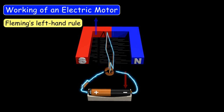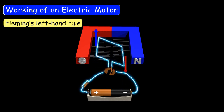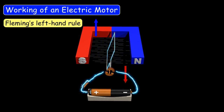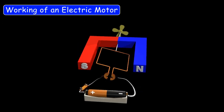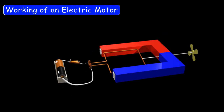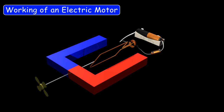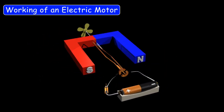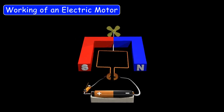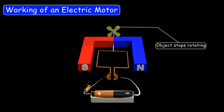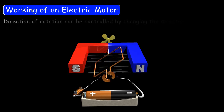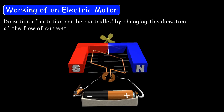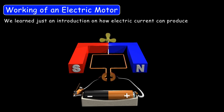The electromagnet keeps rotating as long as the circuit remains closed, as in, as long as the current flows through the coil. Hence, the object connected to the electromagnet — for example, the fan blades of a toy airplane — keeps rotating until the circuit is broken. When the circuit is open, no current flows through the circuit and the motor stops working, because the coil is no longer an electromagnet, and the object connected to it stops rotating. In this way, electricity applied to the coil transforms into motion of the coil. The direction of rotation can be controlled by changing the direction of the flow of current. We will learn about the DC motor in more detail in higher sections — this is just an introduction.